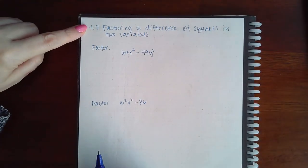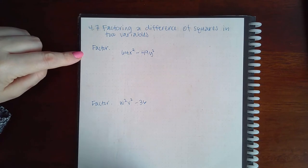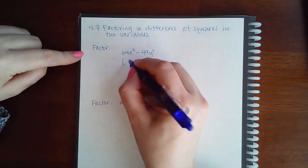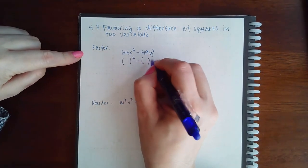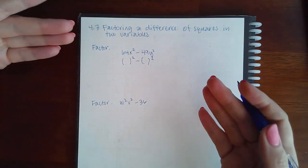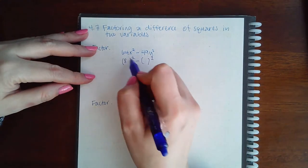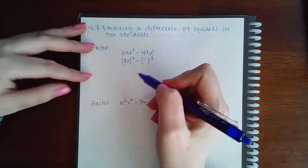Here we have 4.7 factoring a difference of squares in two variables. So first we identify what is being squared and then we can apply the formula. So here I know that 8 squared gives me 64 and x squared gives me x squared.